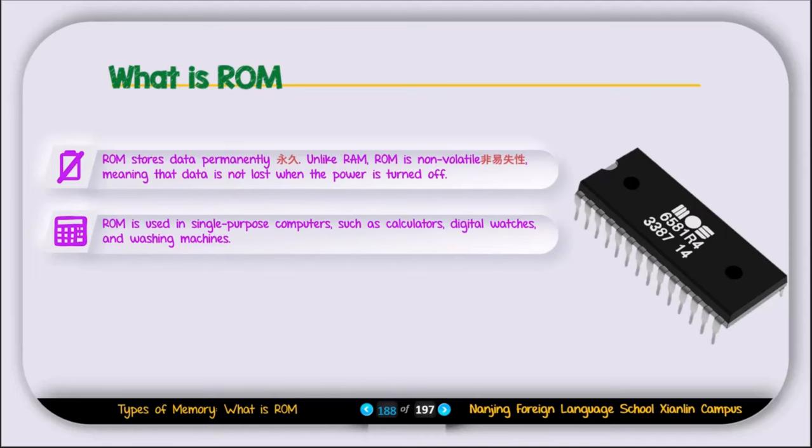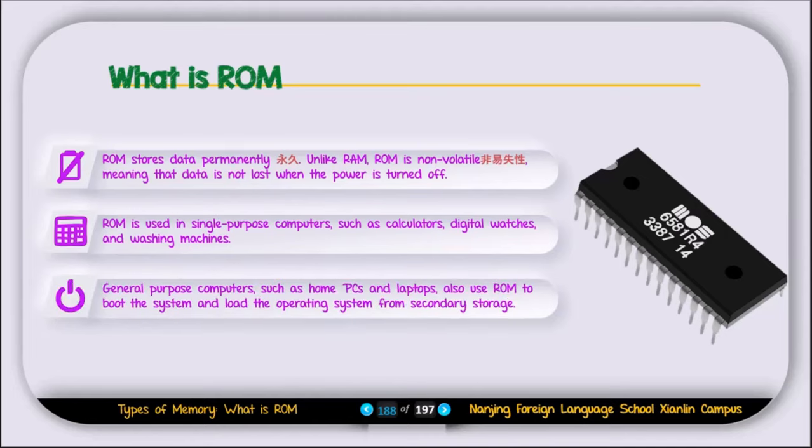ROM is used in single-purpose computers such as calculators, digital watches, and washing machines. General-purpose computers such as home PCs and laptops also use ROM to boot the system and load the operating system from secondary storage.